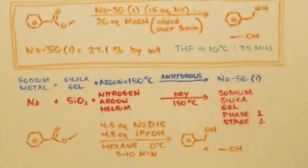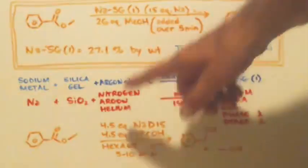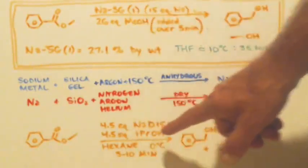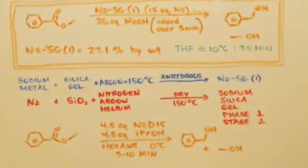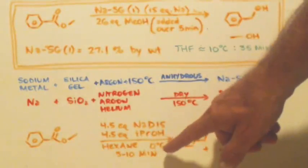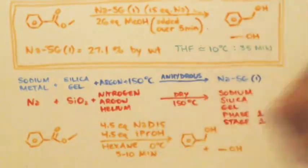Now, this one down here is another one. Now, it only uses, instead of 15 and 26, it's using 4.5 equivalents. It's using sodium D15, and it's using isopropanol. Instead of THF, it's using hexane. Instead of 10 degrees, it's at zero. And 5 to 10 minutes are doing the reaction. That's all. They're done. That's how quick it is.